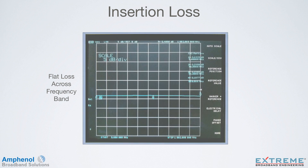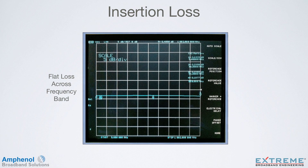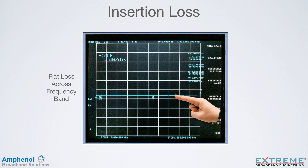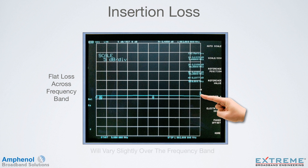To illustrate this, we'll look at a frequency sweep of a network analyzer from 5 to 1,002 MHz. You'll see that the sweep is fairly flat and varies slightly over the entire band. A normal variance is a few tenths to 1 dB.